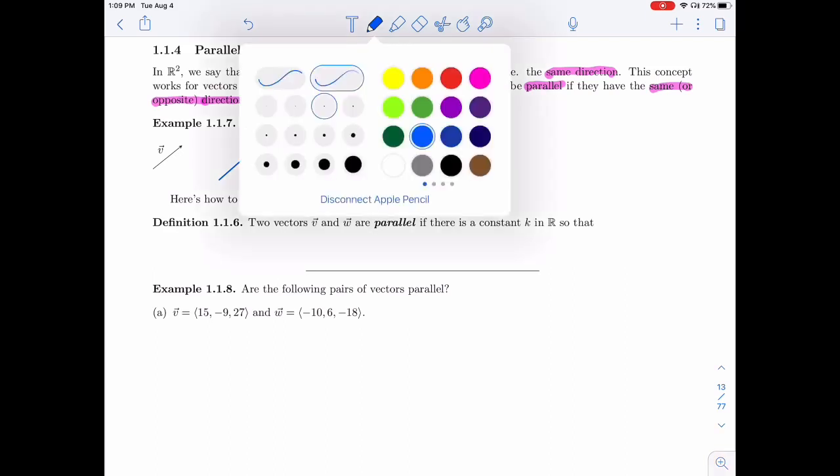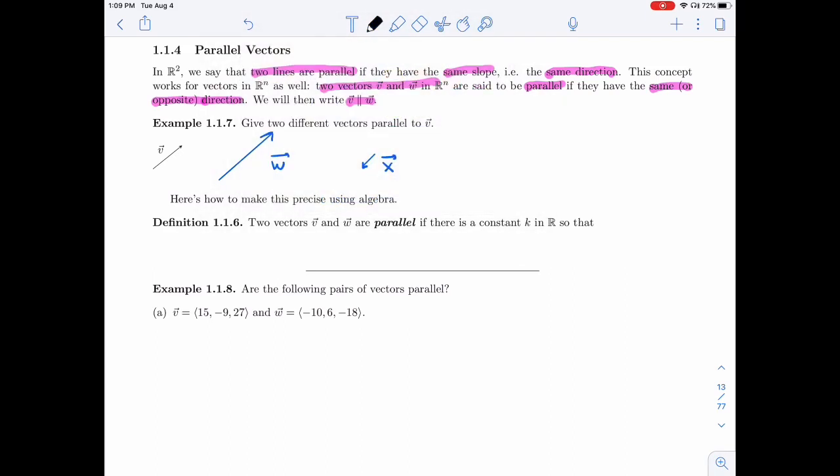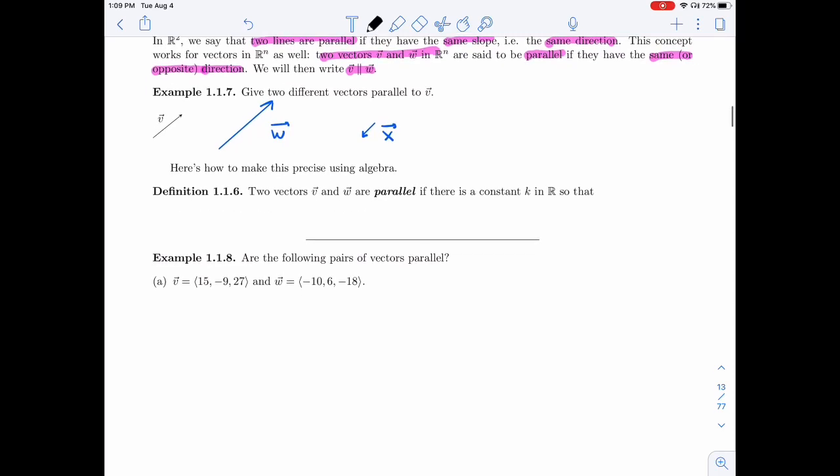All right, so we need to have a good algebraic definition so we can apply it to specific numbers. So two vectors V and W are parallel if there's a constant K such that,